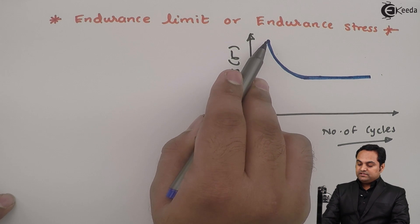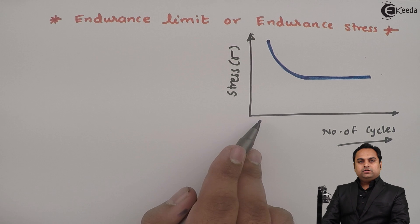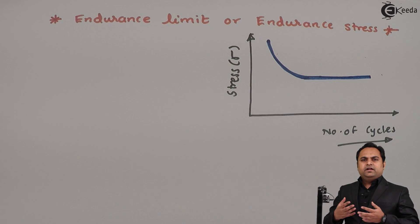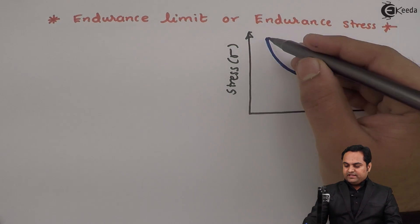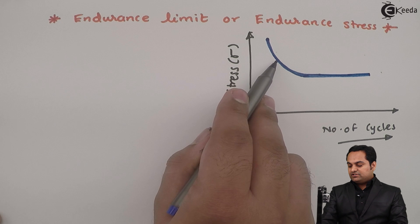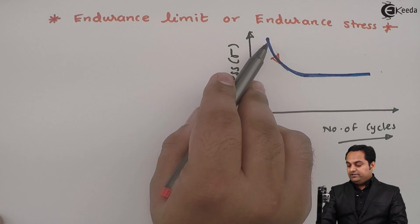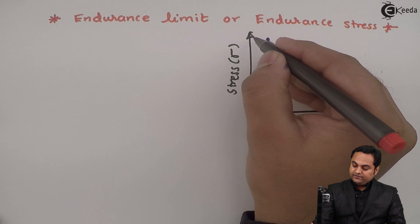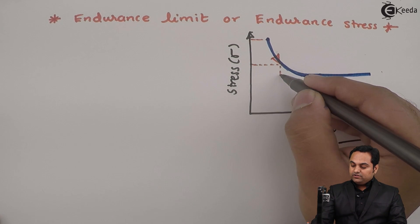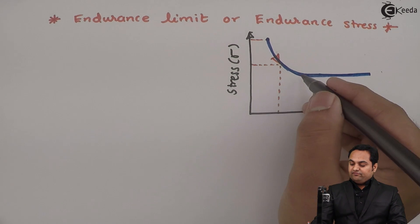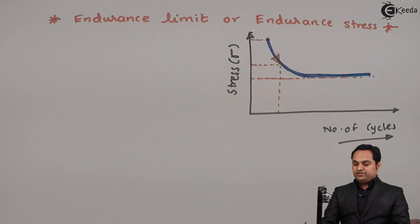If the stress value is high, then the number of cycles for which the object can be used is less. That is, if a material is operated at high stress conditions, it will operate for fewer cycles. But if we go on decreasing the value of stress on the material, the number of cycles goes on increasing.